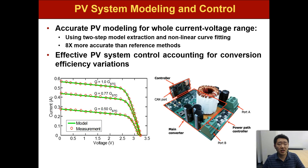The first work is to develop accurate PV modeling for the whole current and voltage range. I use a two-step model extraction and non-linear curve fitting, and we can achieve about eight times more accurate than the reference methods. As shown in the left figure, we can see that the measurement matches with the model very well and this shows better than the reference method.